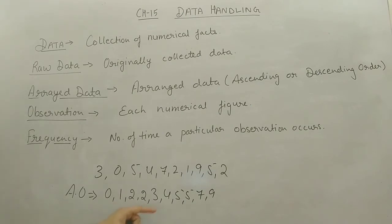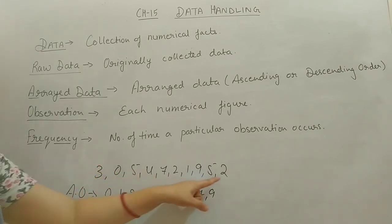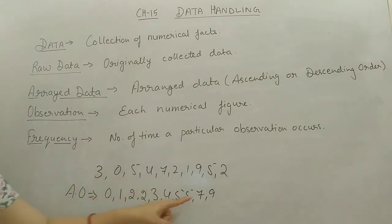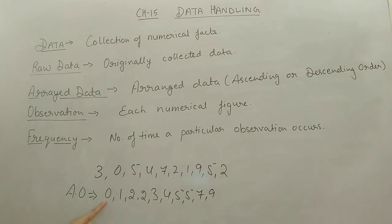So this we will call arranged data in ascending or descending order. Next thing is observation. Observation means each numerical figure. So here we have 10 observations. Next thing is frequency. Frequency means the number of times a particular observation occurs. So if we talk about 0 — how many times 0 is coming? 1 time. So the frequency of 0 is 1. 1 is coming 1 time, so frequency of 1 is 1. 2 is coming 2 times, so frequency of 2 is 2.